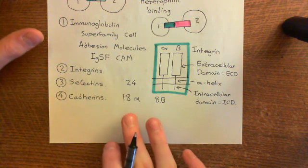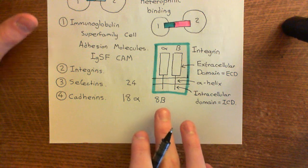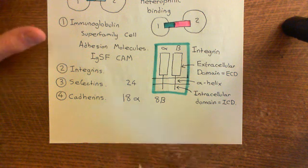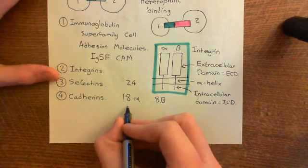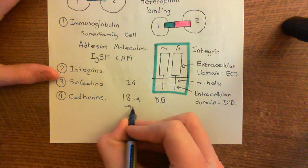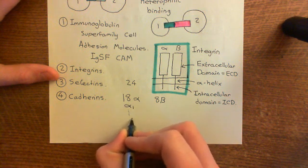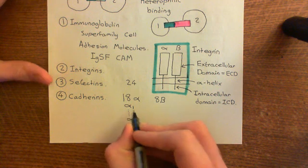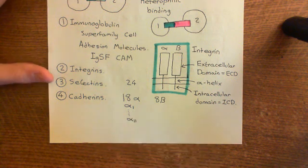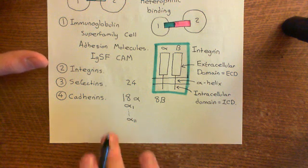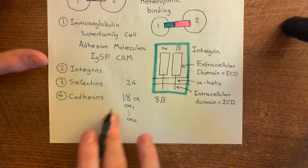The 18 different alpha subunits and 8 beta subunits are named mostly sensibly. There is alpha 1 and it goes all the way down to alpha 11, covering 11 of them: alpha 1, alpha 2, alpha 3, alpha 4, alpha 5, all the way down to alpha 11.